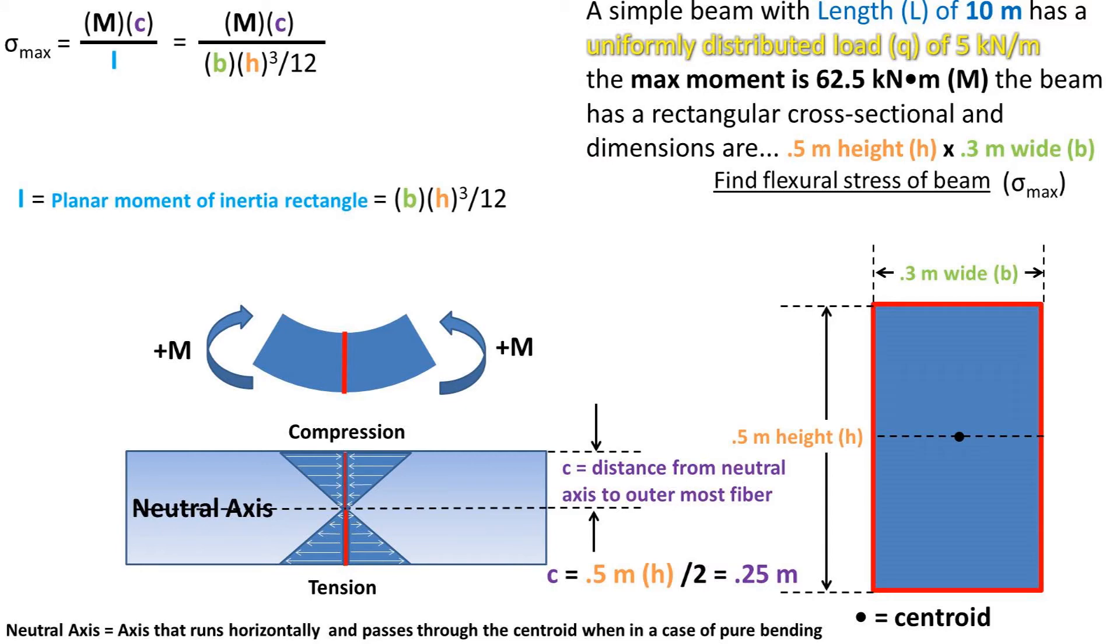Now let's go over the formula for finding the flexural stress max. The equation is max moment times the C, or distance from the neutral axis to the outermost fiber, divided by the planar moment of inertia, which is abbreviated as I.